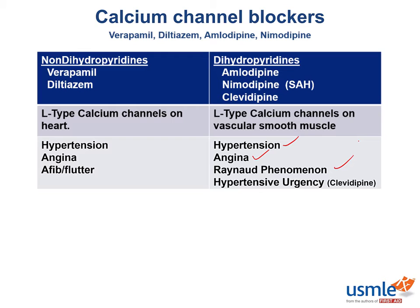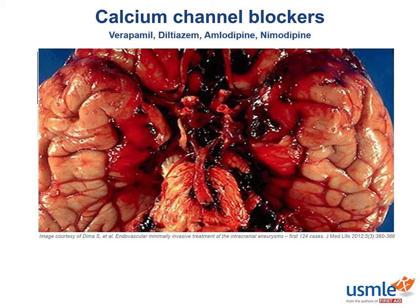Let's apply this to treat a patient with subarachnoid hemorrhage. This patient suffered a ruptured cerebral aneurysm. There are three layers covering the brain from outside to in: the dura, the arachnoid, and the pia mater. A subarachnoid hemorrhage means blood is hemorrhaging into the space below the arachnoid. Blood will irritate the cerebral vessels and can increase the risk of vasospasm. Would you use verapamil with its high cardioselectivity, or nimodipine that mainly antagonizes vascular smooth muscle channels? Nimodipine is the way to go, because we need a dihydropyridine that will inhibit the calcium channels on the vascular smooth muscles of the cerebral vessels.